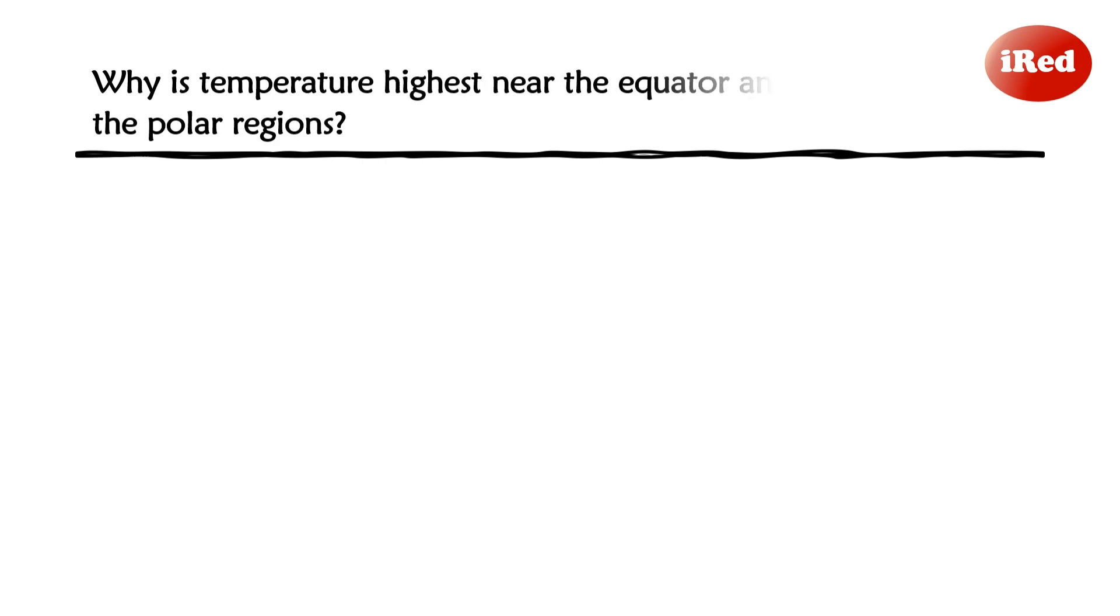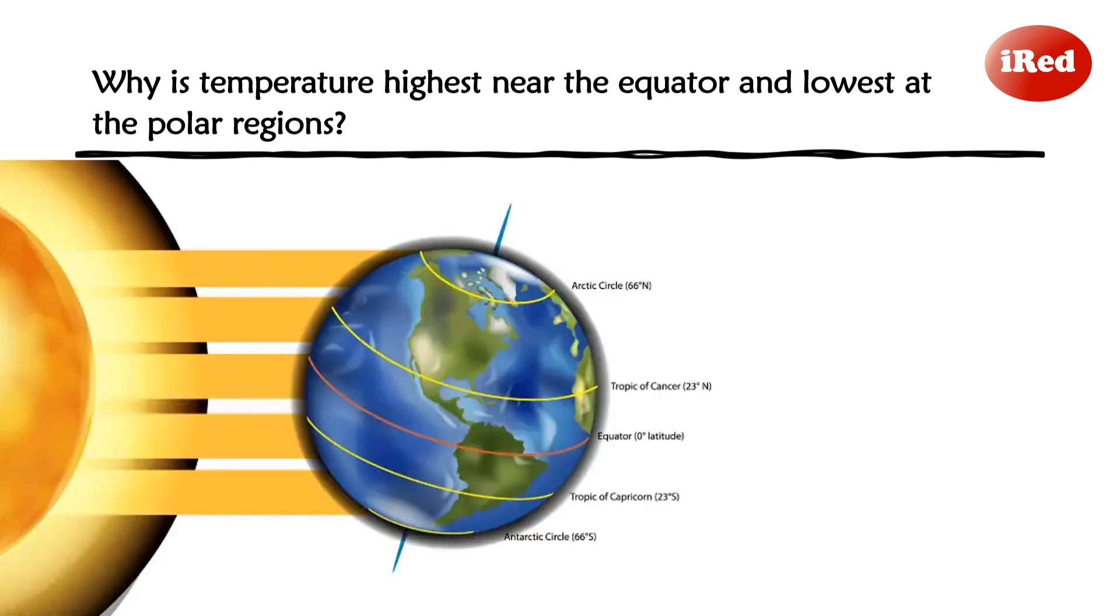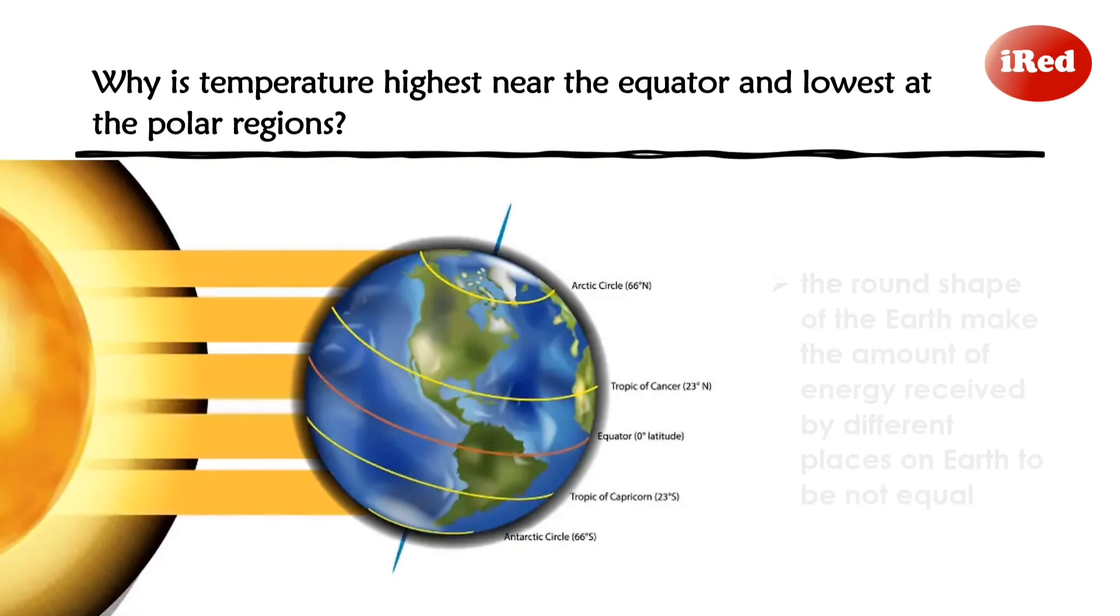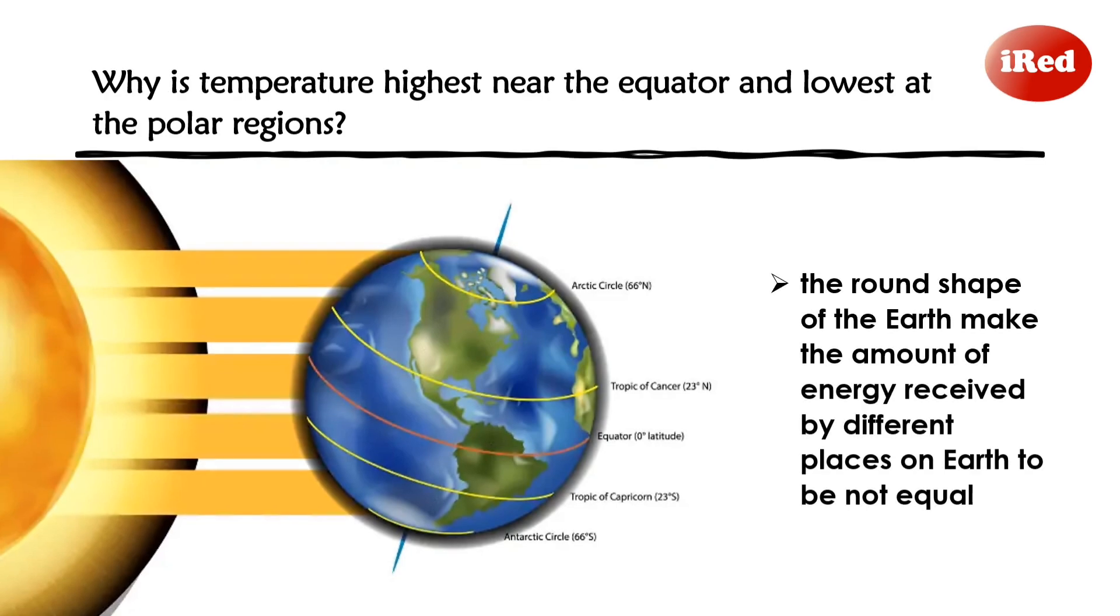But why is temperature highest near the equator and lowest at the polar regions? Let's analyze this illustration. Parallel rays of sun are approaching the Earth. If the Earth were flat, different places would receive the same amount of direct sunlight. Since it is not the case, the round shape of the Earth makes the amount of energy received by different places on Earth to be not equal.